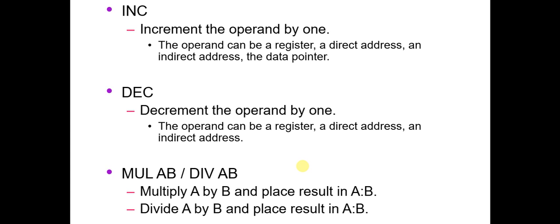The next instruction is DEC, decrement the operand by one. It will do the same thing but in decrement. Next is MUL AB or DIV AB. MUL AB means multiply A by B and place the result in A·B.